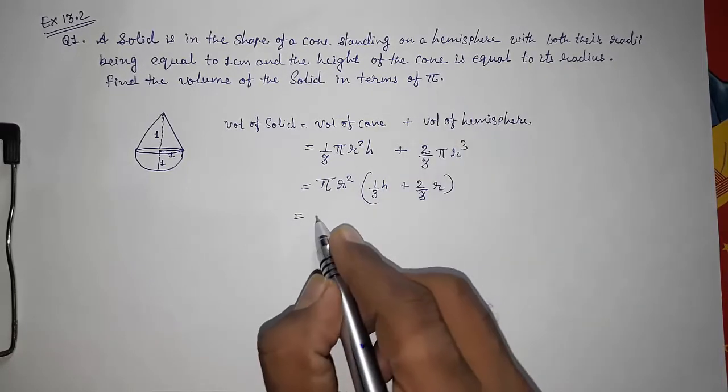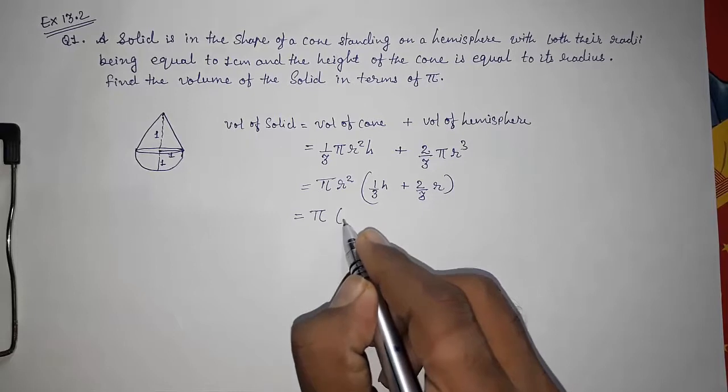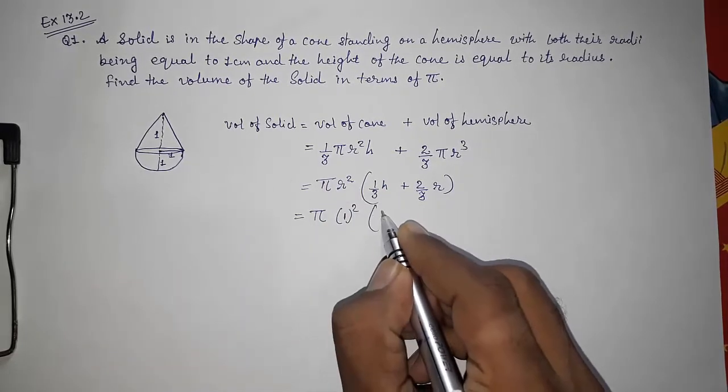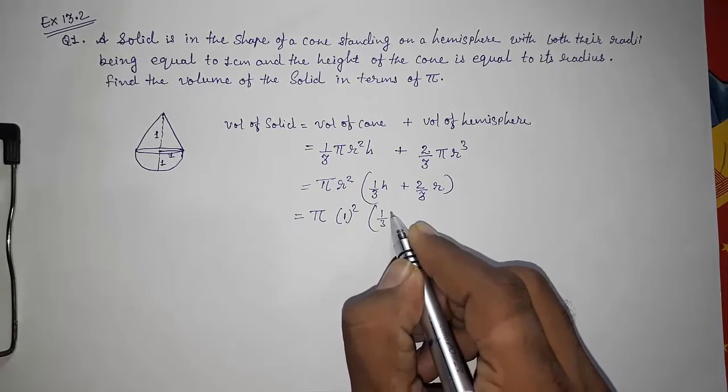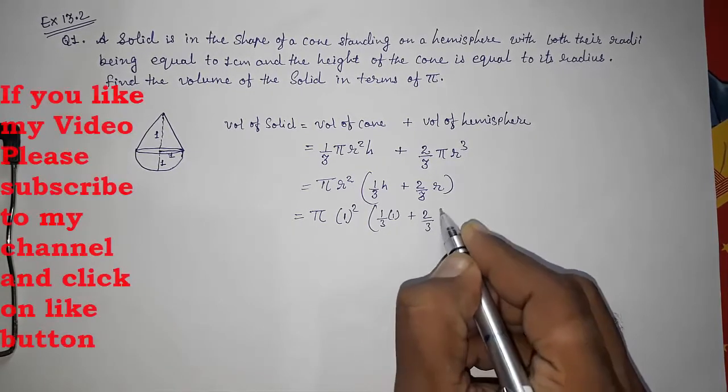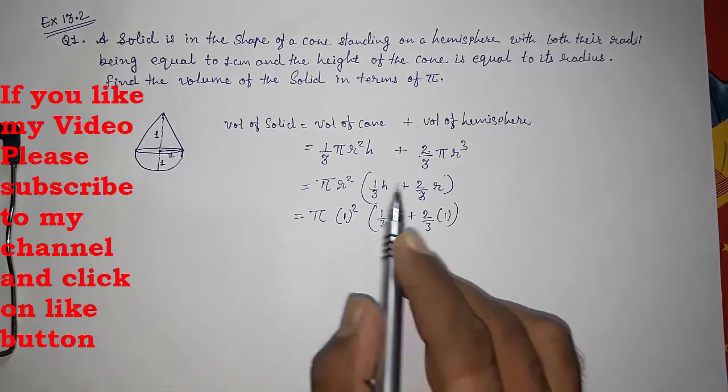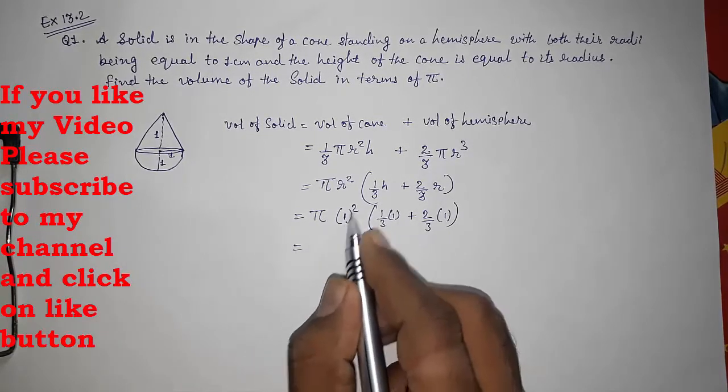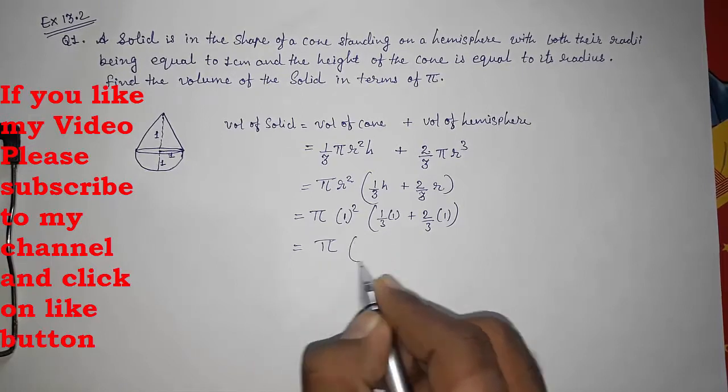So π × 1² (the radius is 1), then 1/3 × 1 plus 2/3 × 1. The radius and height are also 1, so π × 1² will become π only.